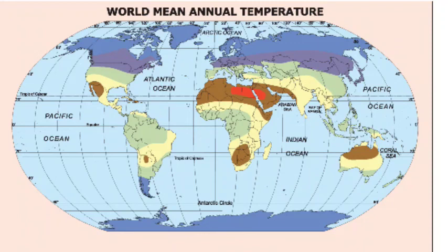How many latitudes pass through Africa? See — three important latitudes: Tropic of Cancer, Equator, and Tropic of Capricorn. Understand. If you observe, which part of the continent receives the highest temperatures? North part of Africa, because it is located in the Sahara desert. Which places record the lowest temperatures? Antarctica region and also the Arctic region.